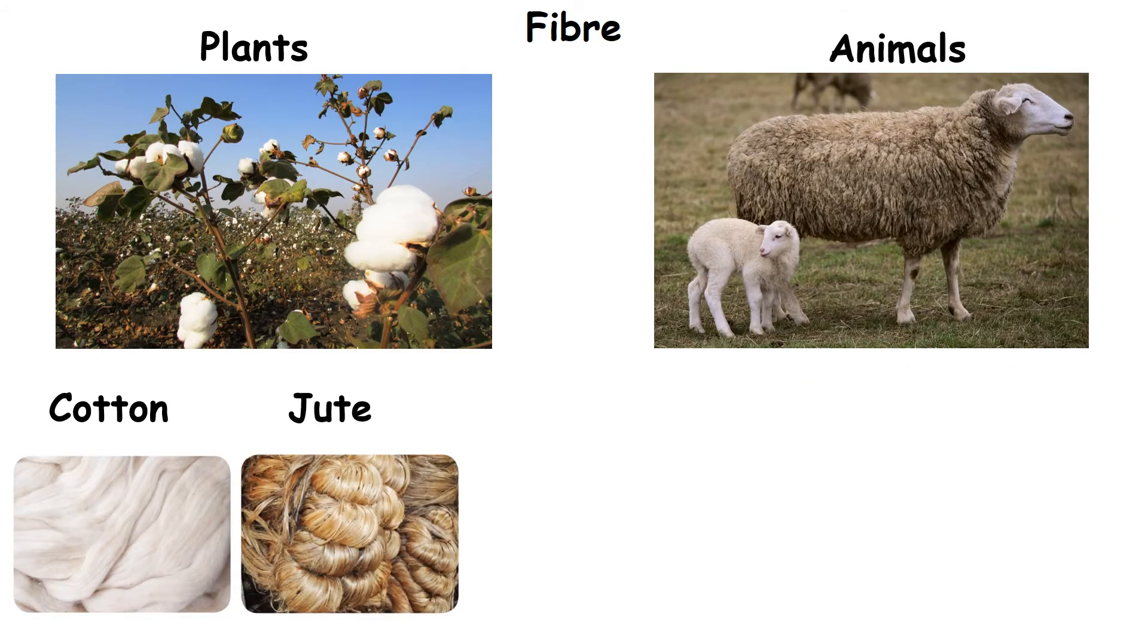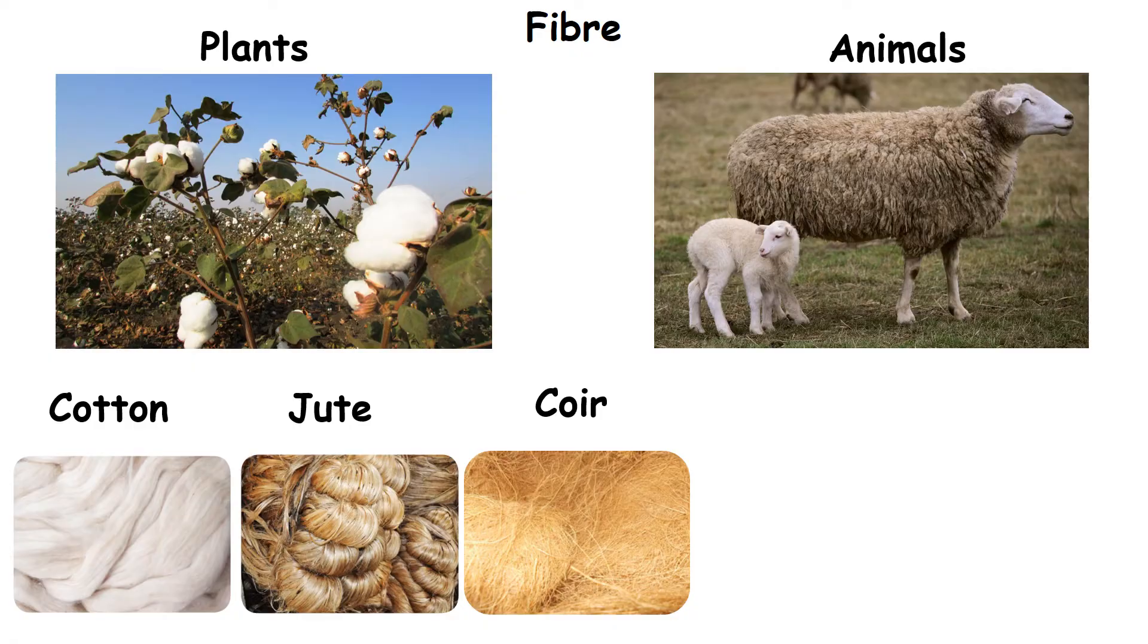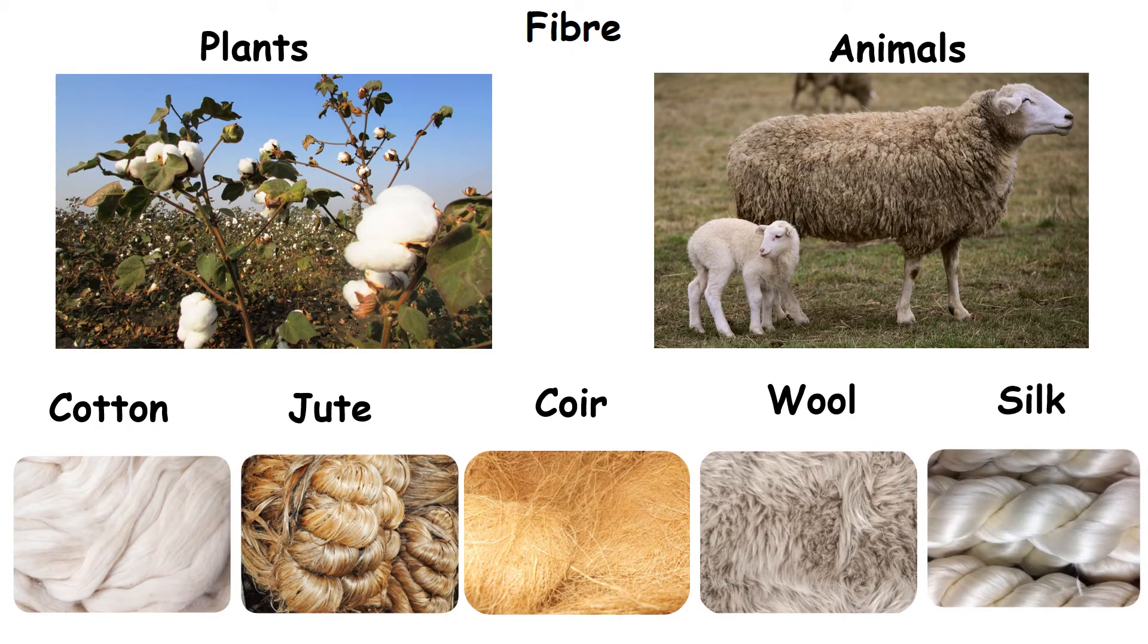Cotton, jute and coir are the fibers got from plants. Wool and silk are the fibers obtained from animals.